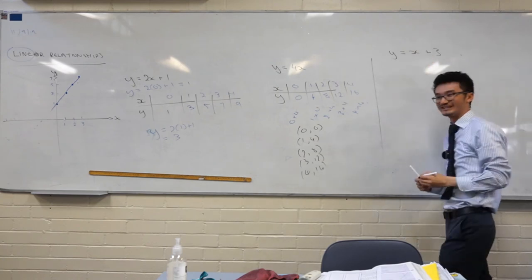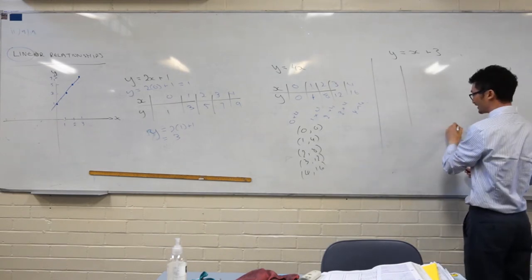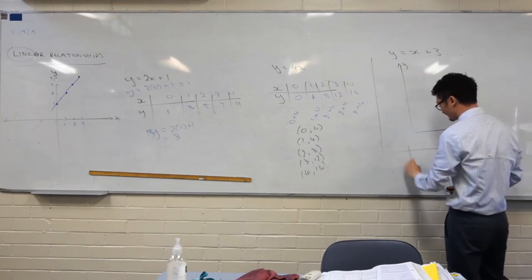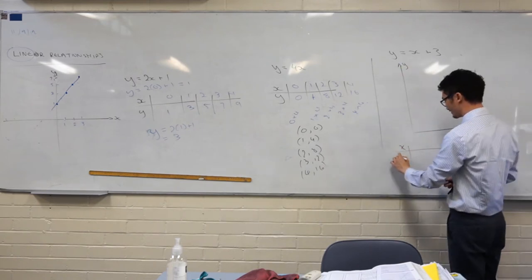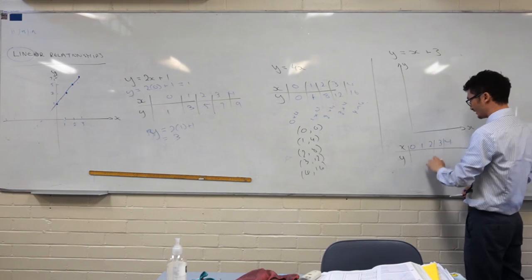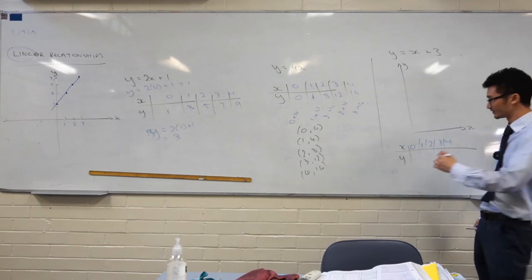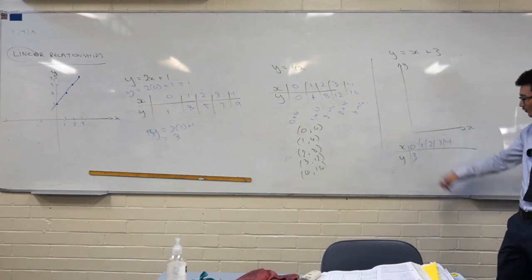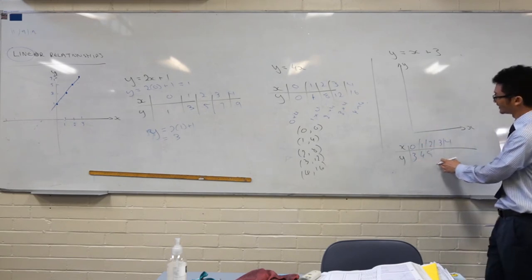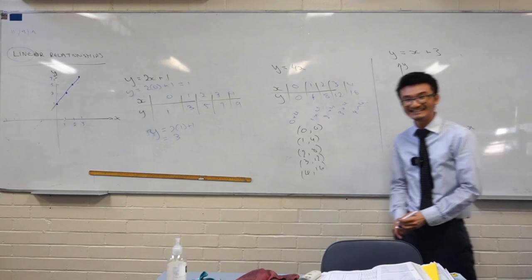So y equals x plus 3 is your rule. And they give you a nice little table there so it's all really easy to do. The table starts from 0, 1, 2, 3, 4. And so you can put that into your equation. So 0 plus 3. Again, you don't have to necessarily write the work out if you're comfortable with this. You can just say, well, 0 plus 3 is just 3. 1 plus 3 is just 4. 2 plus 3 is 5. And again, we can see the pattern that's going on here. It goes up by 1. It's a much easier pattern than before.